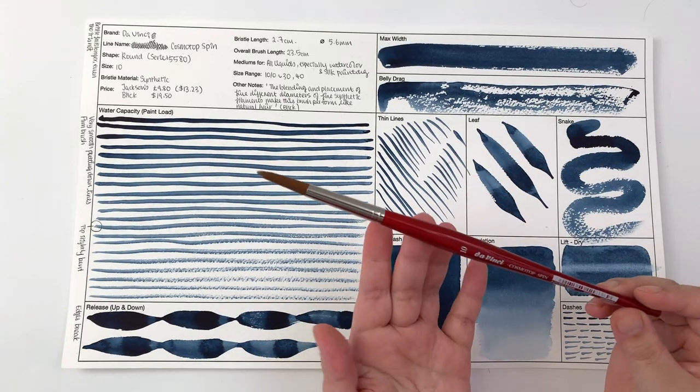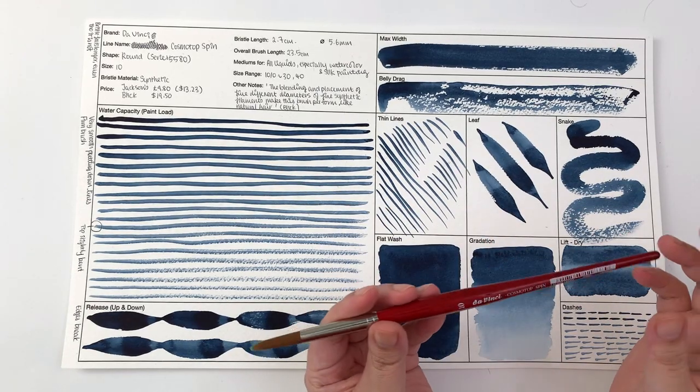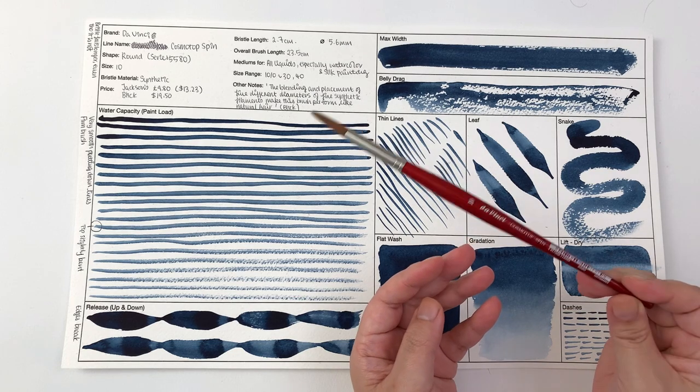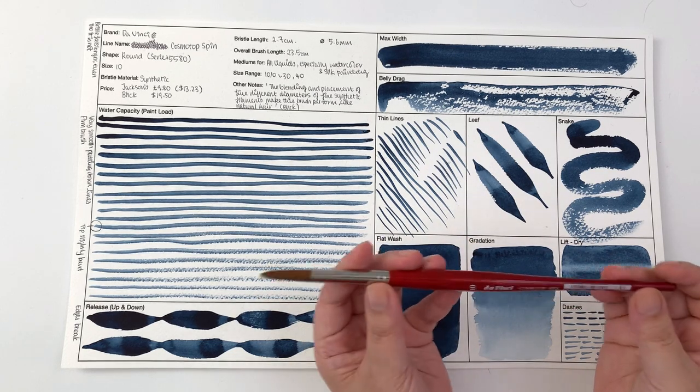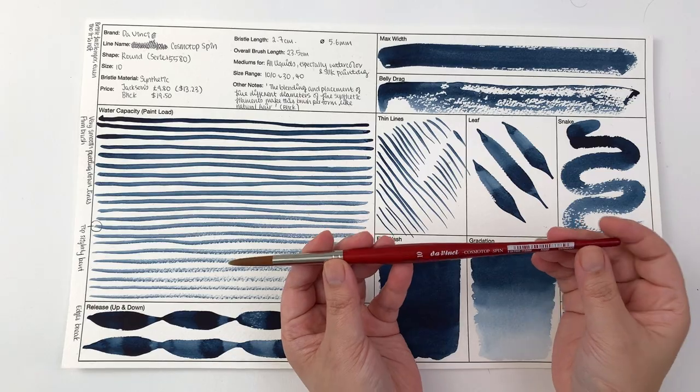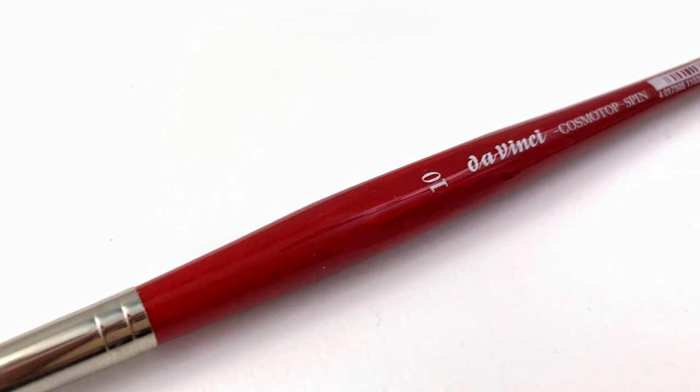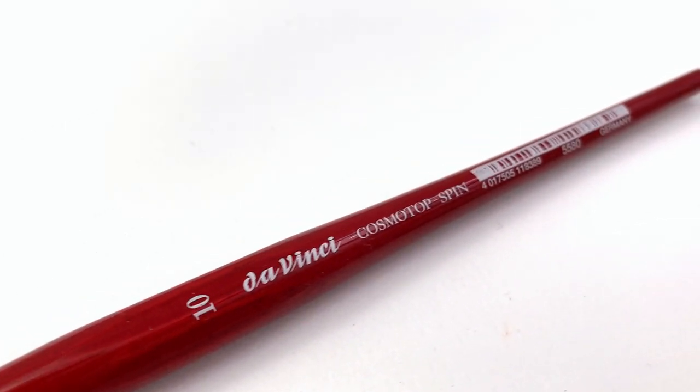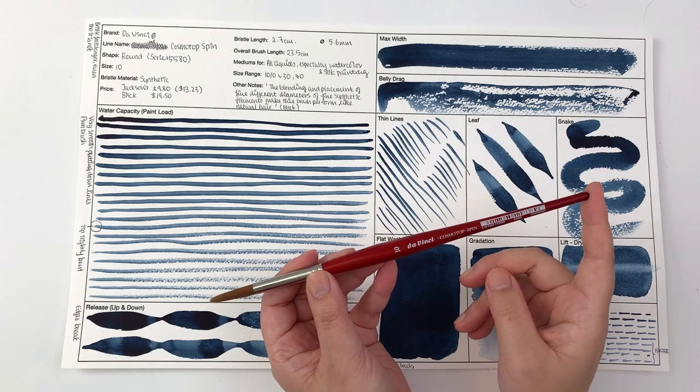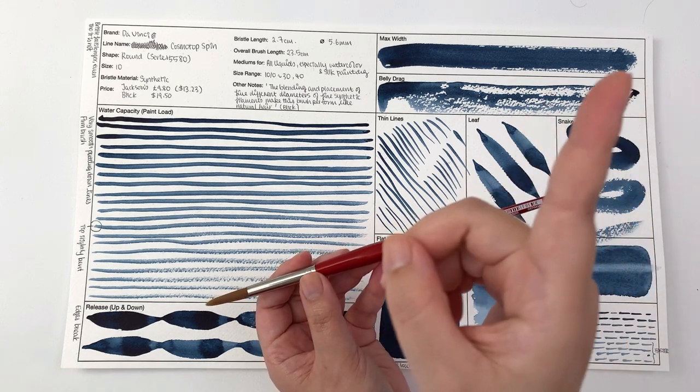Welcome back to the brush review series in which I am in search for the perfect round size 10 brushes and get to know different ones. In this episode we are looking at the Da Vinci Cosmo Top Spin which is different from the Da Vinci Cosmo Top Mix B that we had previously, which I will link up here so that you can compare the two.